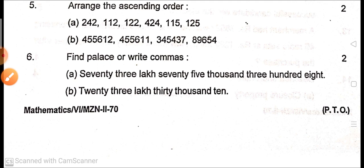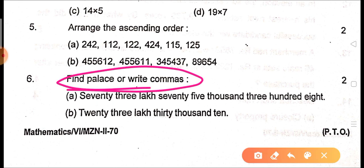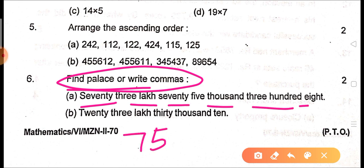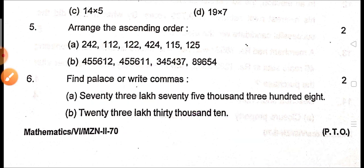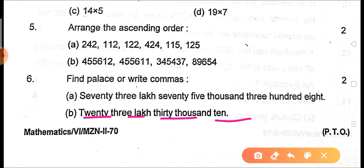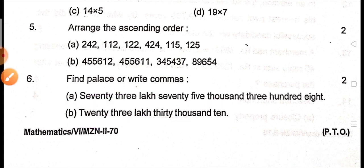Next question: find the places and write commas. First write the numbers, then put commas according to the Indian number system. For example, 73,75,308 — in the Indian system, commas are placed after every two digits from the right (after the hundreds place). The number 29,03,010 — tell me this number in the comments section and show where the commas go.